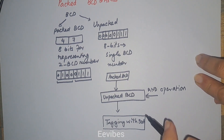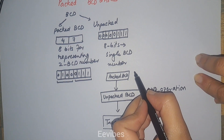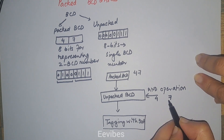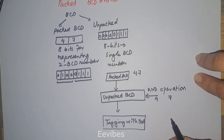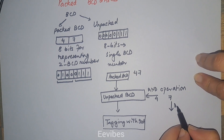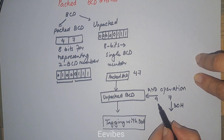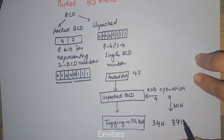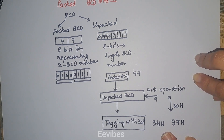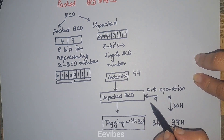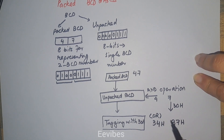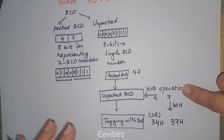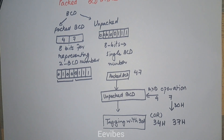When you perform the tagging with 30 hex: assuming the original packed BCD number was 47 hex, we separate it into unpacked BCD so four and seven are represented separately in 8 bits each, then both are tagged with 30 hex. After tagging, four becomes 34 hex and seven becomes 37 hex, which are the ASCII representations of four and seven respectively. The OR operation is used for tagging, i.e., adding bits, while the AND operation is used for removing bits.